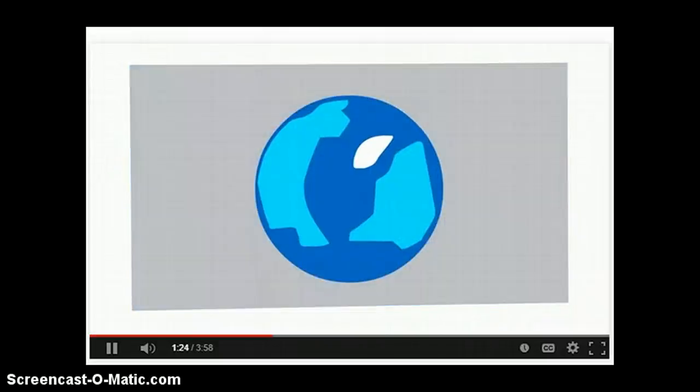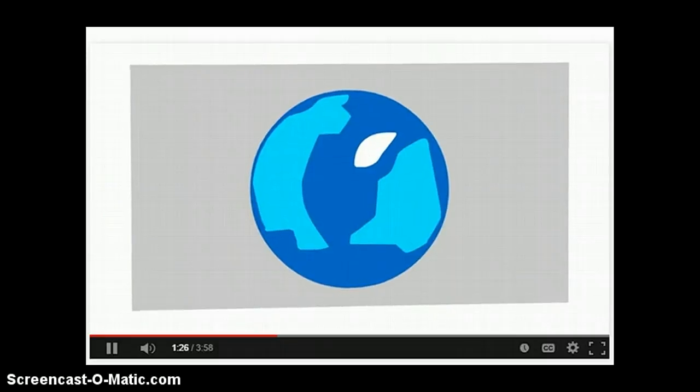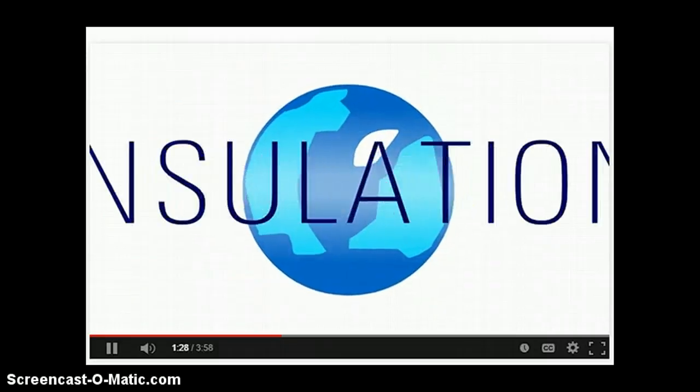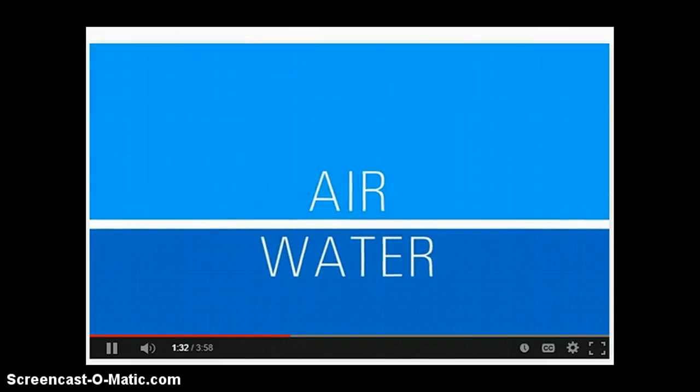Arctic sea ice is also responsible for another feedback mechanism, through insulation. By forming a layer on the ocean surface, the ice acts as a buffer between the frigid Arctic air and the relatively warmer water underneath. But when it thins, breaks, or melts in any spot, heat escapes from the ocean, warming the atmosphere and causing more ice to melt in turn.